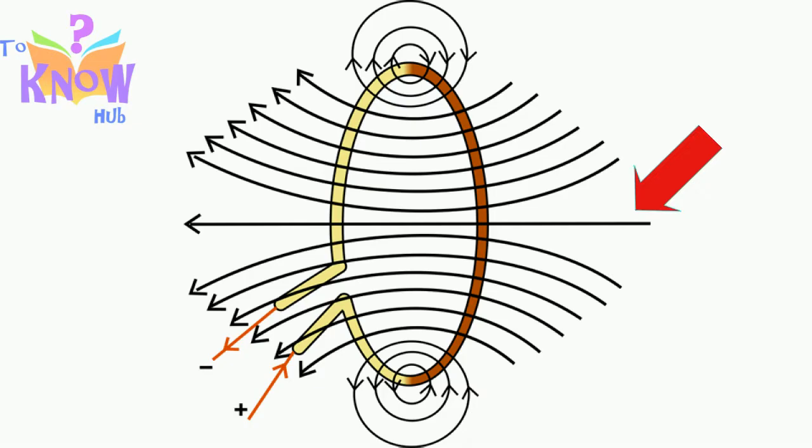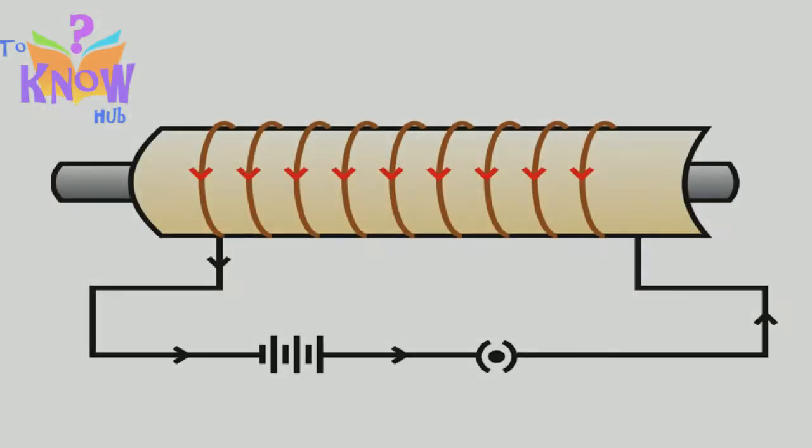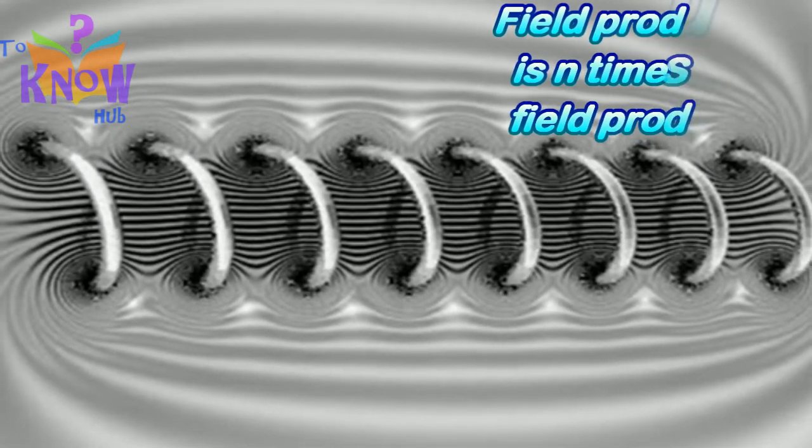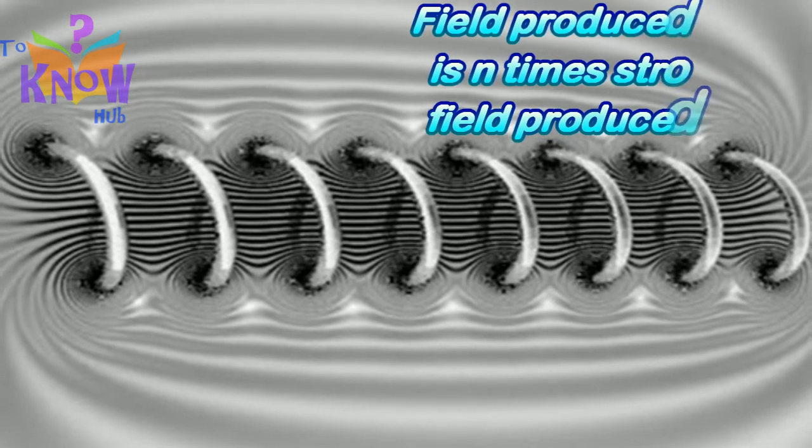Now, remember, we used to wrap wire around an iron bar to make it a magnet. We called it a solenoid. Now, direction of the current would be same in every loop of a solenoid. Hence, magnetic field direction is same for every loop.